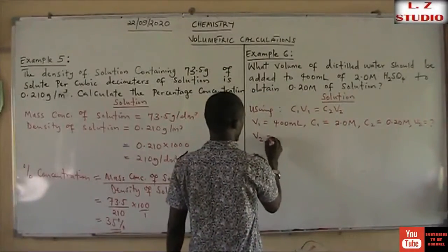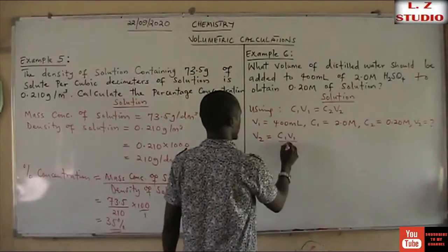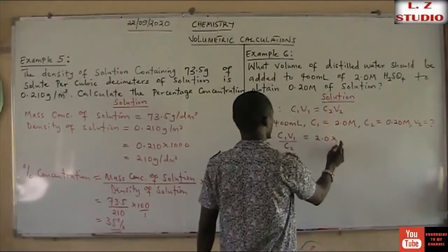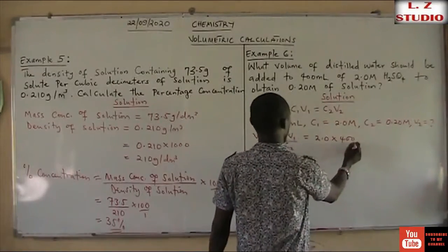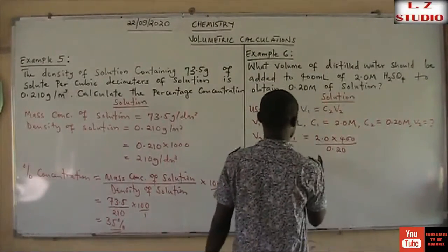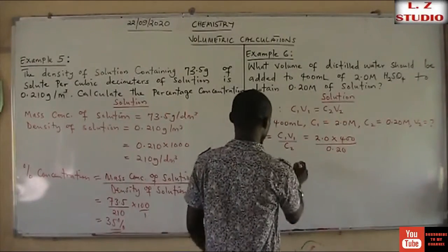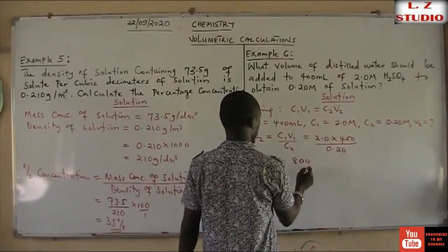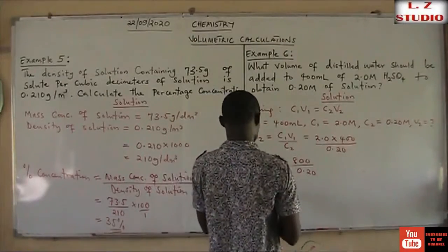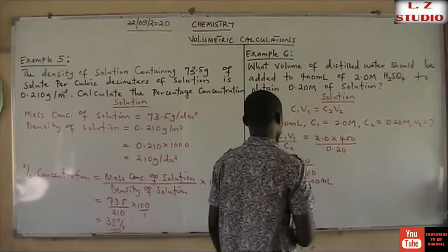By making V₂ the subject of the formula, we have V₂ = C₁V₁ / C₂. Substituting: V₂ = (2.0 × 400) / 0.20, which gives 800 / 0.20, so V₂ equals 4000 mL.